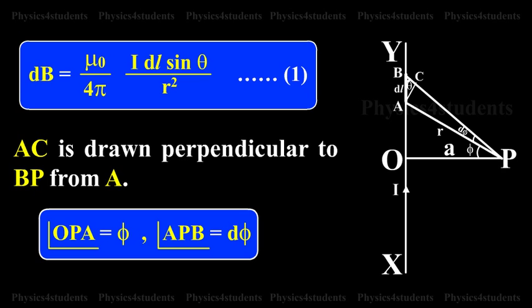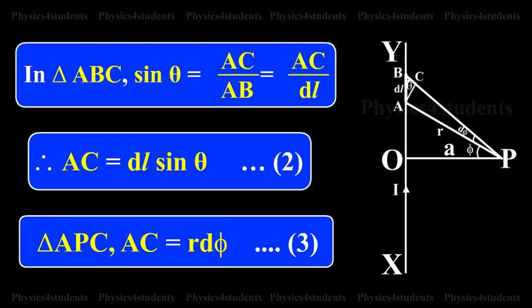AC is drawn perpendicular to BP from A. Angle OPA equals φ. Angle APB equals dφ. In triangle ABC, sin θ equals AC by AB equals AC by dL. Therefore, AC equals dL sin θ. This is equation 2.